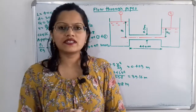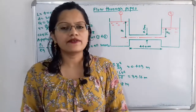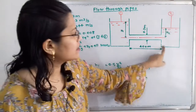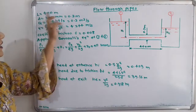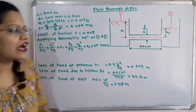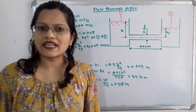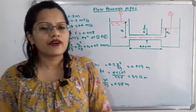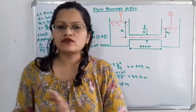Let us first understand the diagram as per the given data. Two tanks are connected by a horizontal pipe. This is the first tank and here is the second tank with a horizontal pipe between them. For this pipe, the length L is equal to 400 m, and the diameter D is equal to 300 mm, which we convert to standard units: 0.3 m. Water in the first tank is flowing through the pipe and getting discharged to the second tank.